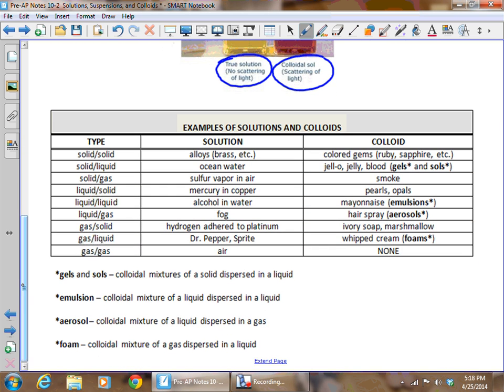Here are some examples of solutions and colloids. Notice that there are nine different types of mixtures, depending on what the solvent or dispersed medium is, whether it's a solid, liquid, or gas, and what the solute or the dispersed material is. If we have a solid dissolved in a solid, that's an alloy. If it's dispersed in a solid, it's a colored gem, like a ruby or sapphire. And this is weird because when you think of solutions, the first thing that pops into your head is liquid, but notice that a solution can be any state of matter.